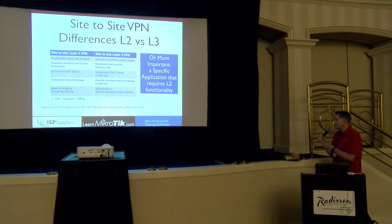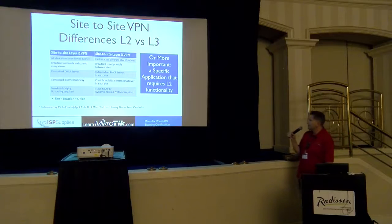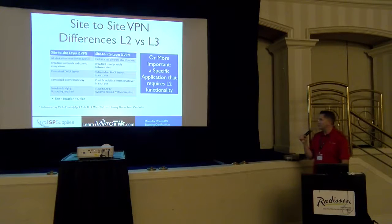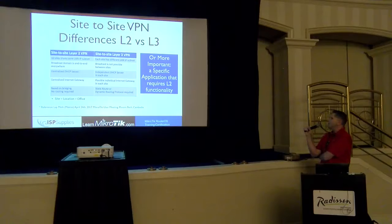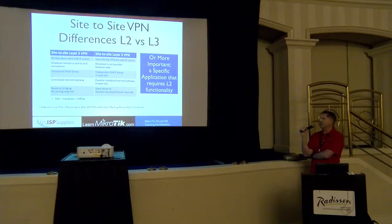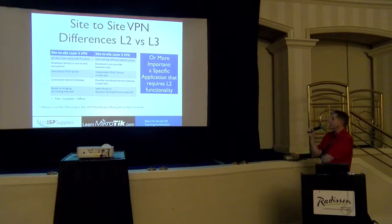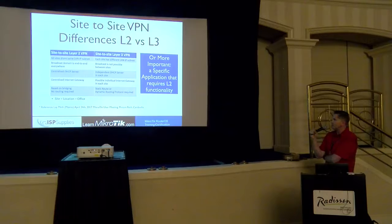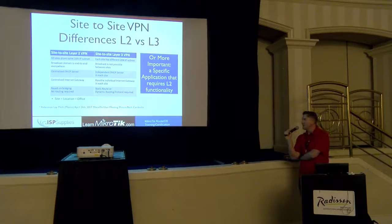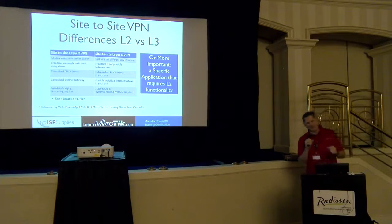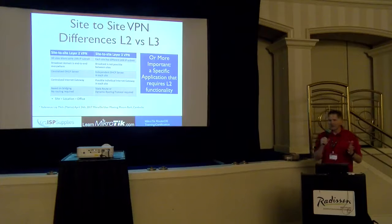I borrowed this slide from another trainer at another MUM. It covers the differences between Layer 2 and Layer 3 VPN. With Layer 2, all sites share the same LAN subnet, so routing is easier because there is no routing — we're all on the same subnet. The broadcast domain is end-to-end, you can have a centralized DHCP server, and it simplifies the network. It almost seems like going backwards from routed back to bridged, but I'm talking about using it only when it's most appropriate.